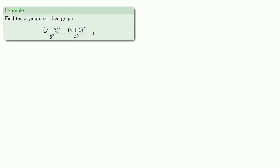So let's find the asymptotes, then graph this hyperbola. So the first thing to notice is that this is a transformation of y squared divided by 5 squared minus x squared divided by 4 squared equal to 1. So to find the asymptotes, we observe the following if we solve for y.